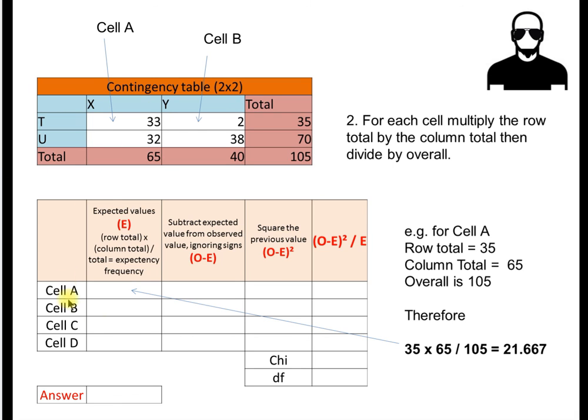Now we've done that, we need to take our table and we need to calculate the expected values for each of the cells. Remember, I said that was cell A, cell B, cell C, cell D. Let's do it for cell A. We take the row total, which in this case for A is 35. We multiply it by the column total, which is 65. And we divide that 35 times 65 by the overall frequency, 105.